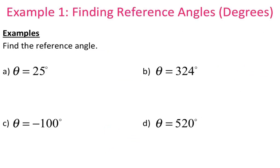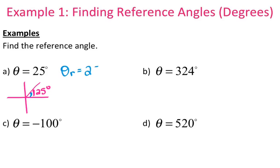So let's do some examples. Letter A: the first thing you need to do is actually draw the angle — just sketch out where it would be. So 25 degrees would be this angle right here. You want to sketch out the angle because the quadrant you're in will determine how you find the reference angle. So your reference angle for 25 degrees, since it's in the first quadrant, is also going to be 25 degrees. You write theta-R for reference angle.